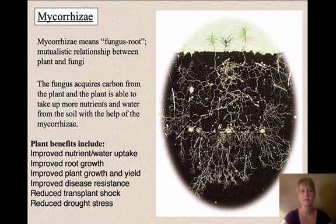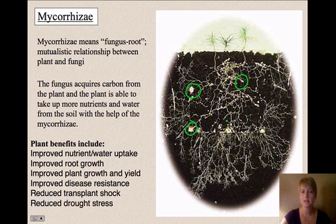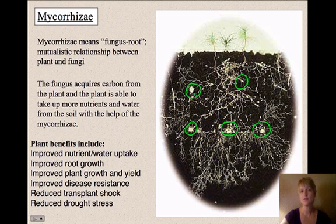There is something called mycorrhizae, which means 'fungus root.' It's a mutualistic relationship between plants and fungi. The fungal structures form by the roots of plants and allow the plant to take up more nutrients and more water, while the fungus acquires carbon from the plant. Without this fungus, plants would not grow as well — they are more productive and effective when the fungus is present.